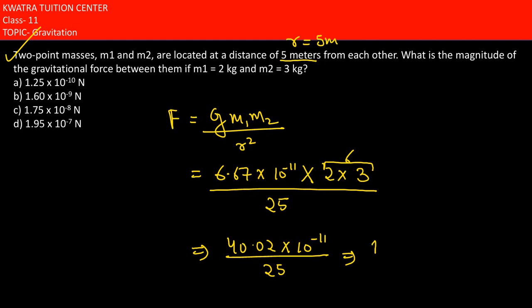So that would be 1.60 × 10^-11 Newton. So this must be option B. This would be 10^-11 Newton, so this would be option B in this case.